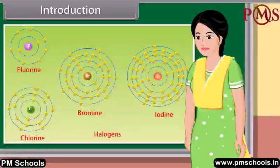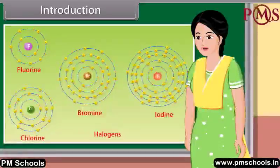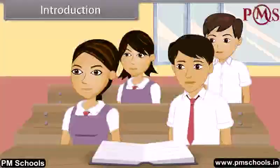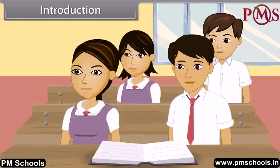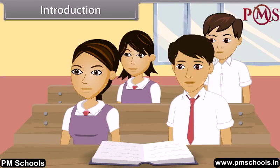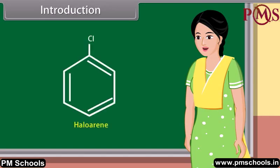So now, can anybody tell me what haloarenes are? Yes, ma'am. Haloarenes are the molecules in which halogen atoms are bonded with carbon atoms that are a part of an aryl ring. Very good, Rohit. In this lesson, we learn more about haloalkanes and haloarenes.